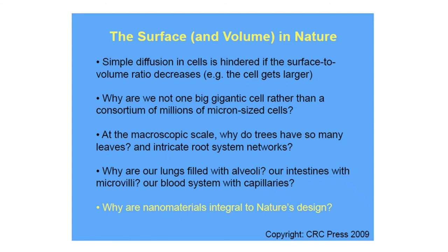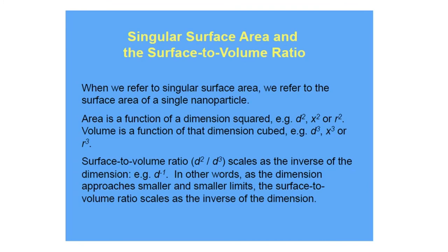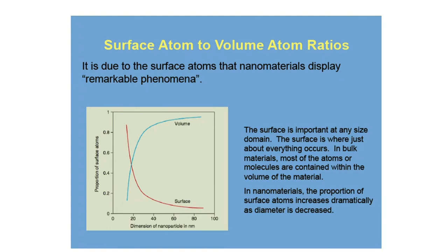At the macroscopic scale: why do trees have so many leaves and intricate root system networks? Why are our lungs filled with alveoli, our intestines with microvilli, our blood systems with capillaries? Why are nanomaterials integral to nature's design? These are fundamental questions. The main idea is to increase the surface area to volume ratio. Surface to volume ratio scales as the inverse of dimension — this was known even 2000 to 3000 years ago, allowing people to create remarkable nano-scale structures even before the modern era.